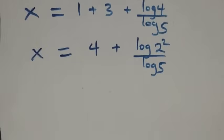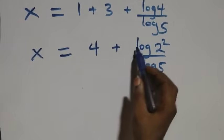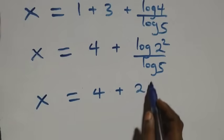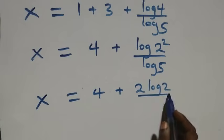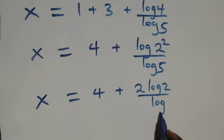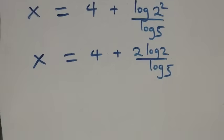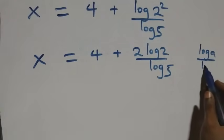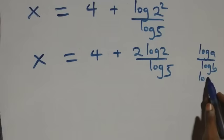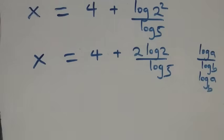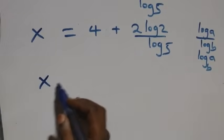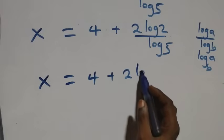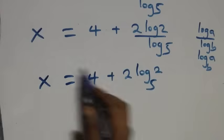Applying the power rule of logarithms, two comes down and we have x equals to four plus two log two over log five. Using the change of base rule, log a over log b is the same as log a to base b, so what we have becomes x equals to four plus two log two to base five. That is the value of x in this problem.